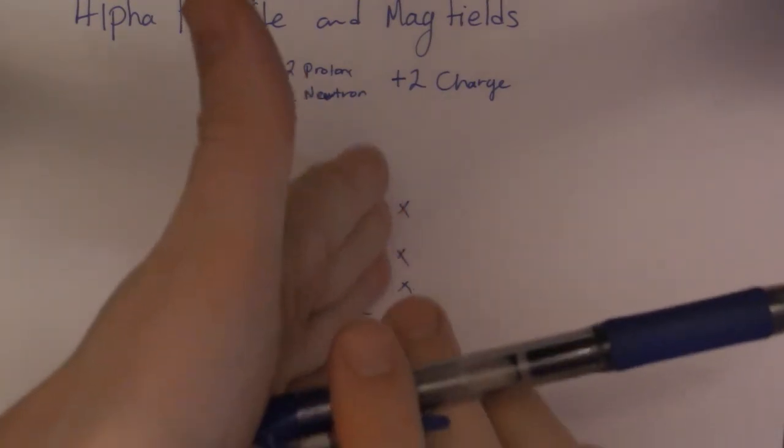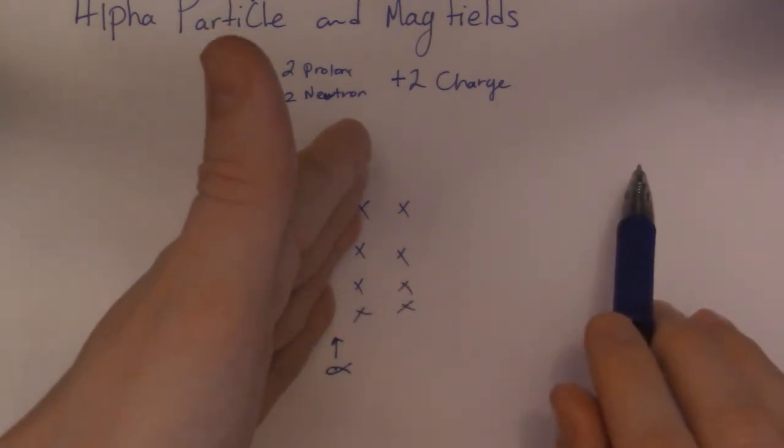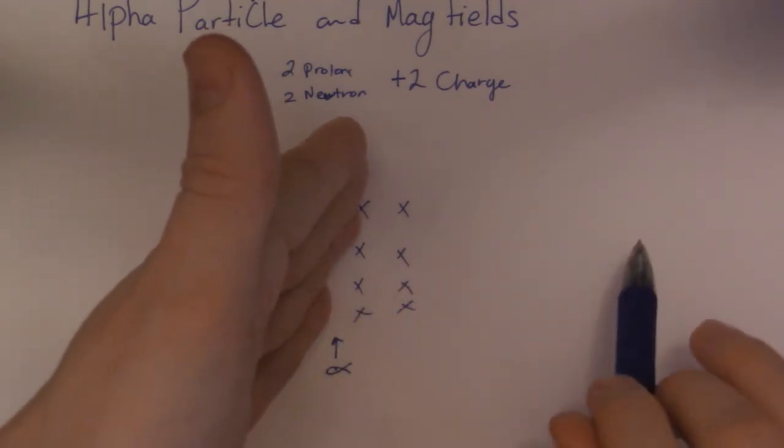So normally it would be my palm that tells me what happens to the electron. So if this was an electron, it would shoot off to the right. Or if it was a beta particle, it would shoot to the right.